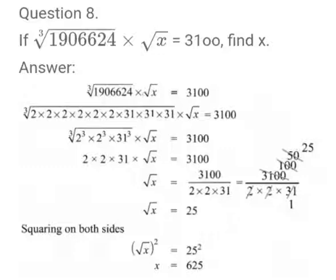So this equation transforms to 2 into 2 into 31 into root x equals 3100, which implies root x equals 3100 divided by 2 into 2 into 31. We are simplifying, we get root x value is equal to 25.